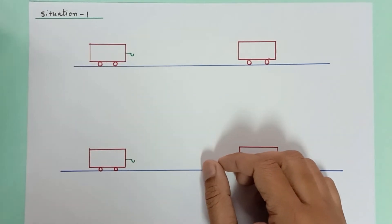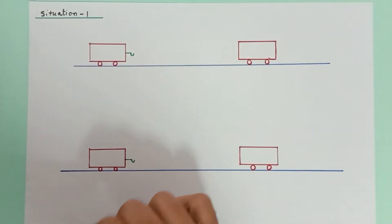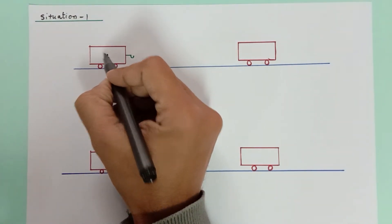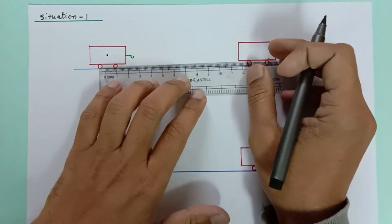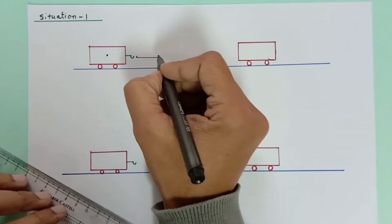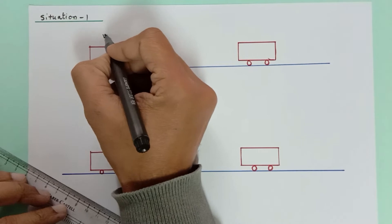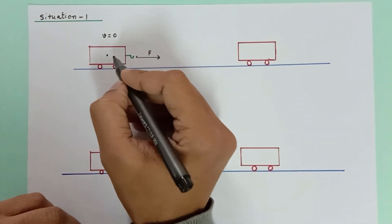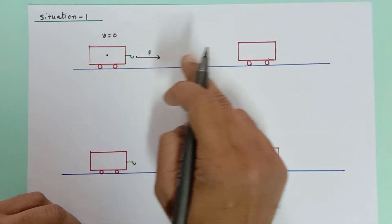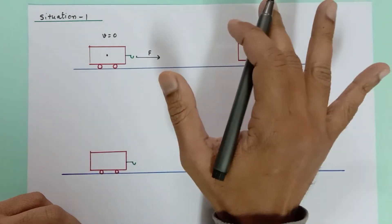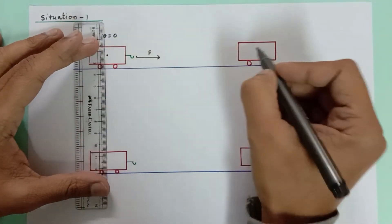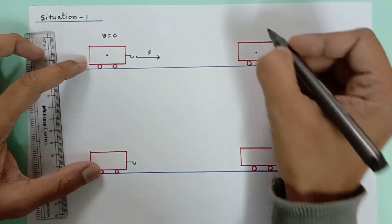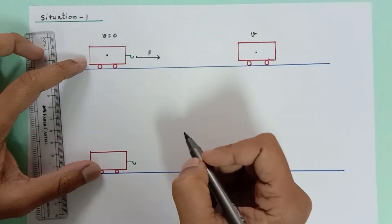Let us discuss situation 1. We have a toy car and we exert a force in the forward direction. Initially the speed of the toy car is zero. When force F is applied, the van starts to accelerate, its speed increases, and after time T the car reaches a new position, having traveled some distance d.